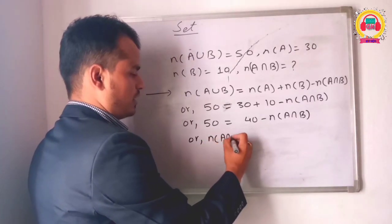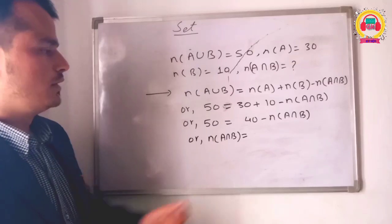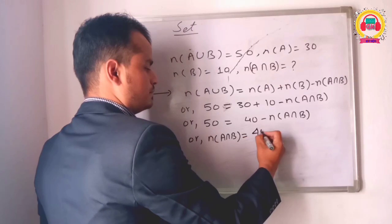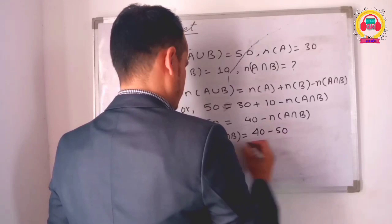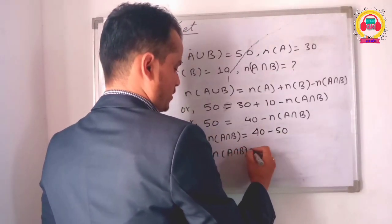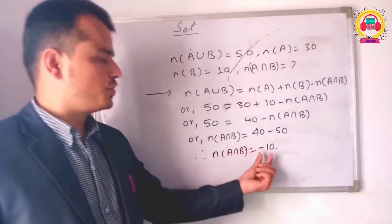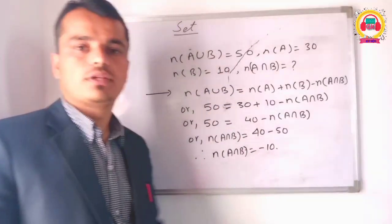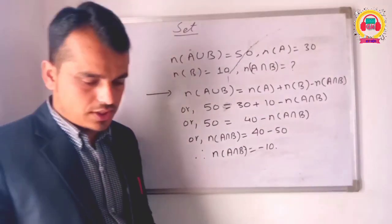Number of A intersection B is equal to 40 minus 50, so therefore number of A intersection B equals negative — wait, the answer should be a positive. Solve the question. The answer is obtained from the equation.